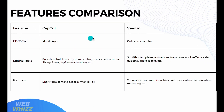In terms of platform features, CapCut offers a mobile app while Vid.io offers an online video editor. Regarding editing tools, CapCut offers speed control, frame-by-frame editing, reverse video, music library, filters, keyframe animation, and more. While Vid.io offers subtitles, templates, animation, transitions, audio effects, video dubbing, audio-to-text, and more. In terms of use cases, CapCut focuses on short-form content especially for TikTok, while Vid.io covers industries such as social media, education, and marketing.